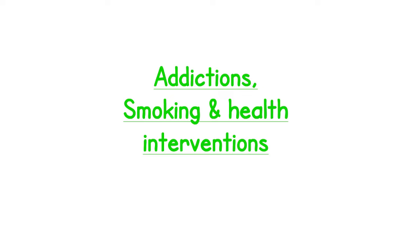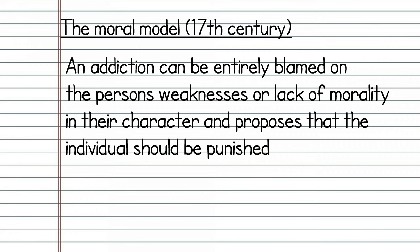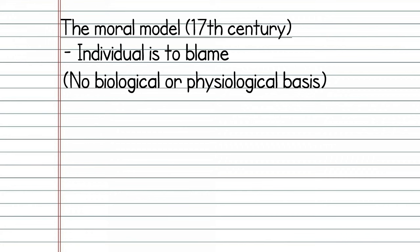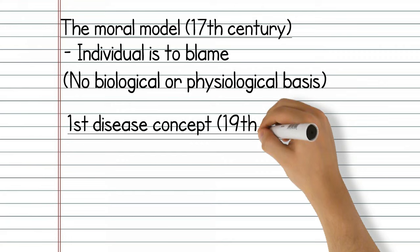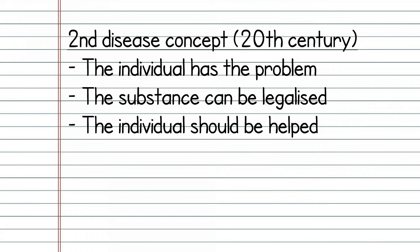Now let's look at addictions and the role health behaviour models play in intervention strategies against addiction. Let's look at the evolution of addiction as a disease concept. Our understanding and rationale of addictions has come a long way since the first model of addiction. The moral model, which originated in the 17th century, proposed that an addiction can be entirely blamed on the person's weaknesses or lack of morality in their character, and proposes that the individual should be punished. The model was massively flawed as it didn't give any rise to the biological or physiological basis for addiction.